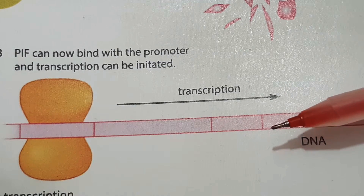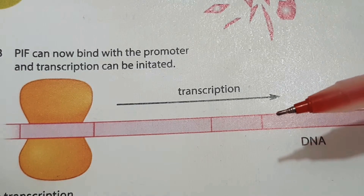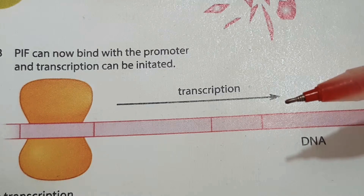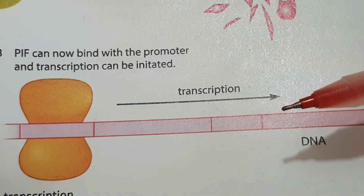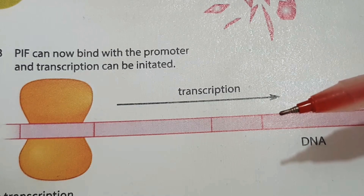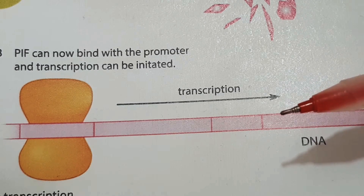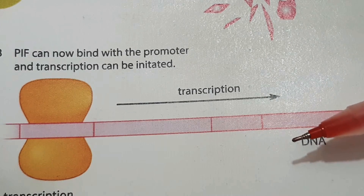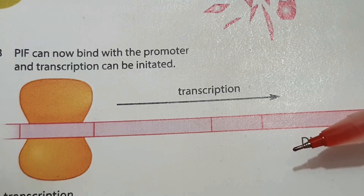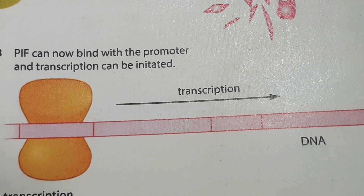Gibberellin has this effect by causing the breakdown of the DELLA protein. The DELLA protein inhibits the binding of a transcription factor such as phytochrome interacting protein — that is PIF. You must remember that. By causing the breakdown of the DELLA protein, gibberellin allows PIF to bind to its target promoter, transcription of the gene can then take place, resulting in an increase in amylase production. I hope that's clear — thank you for watching.